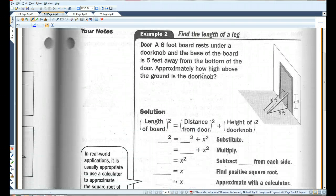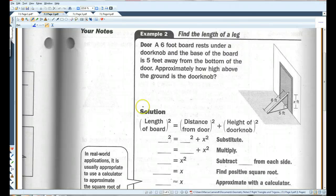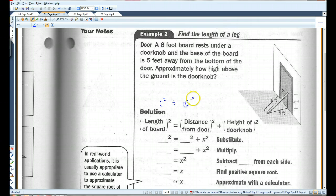A 6-foot board rests under a doorknob, and the base of the board is 5 feet away from the bottom of the door, as shown in the diagram. Approximately how high above the ground is the doorknob? So, this is what we're looking at. We have C squared equals A squared plus B squared. As you can see, 6 is the hypotenuse. So, that's what I'm going to plug in for C. The distance from the door, I'll make that A, is 5. And the height of the doorknob is what we're trying to find. So, I plugged everything in. 6 squared is 36. 5 squared is 25. I'm going to subtract 25 from both sides, and I get 11.